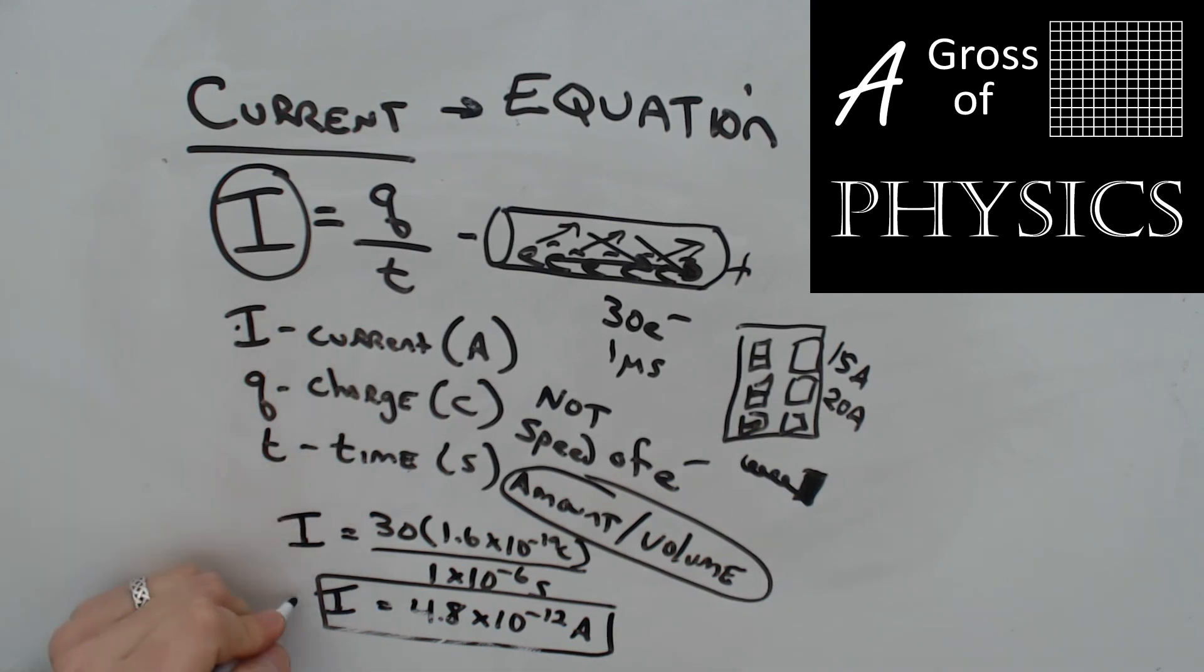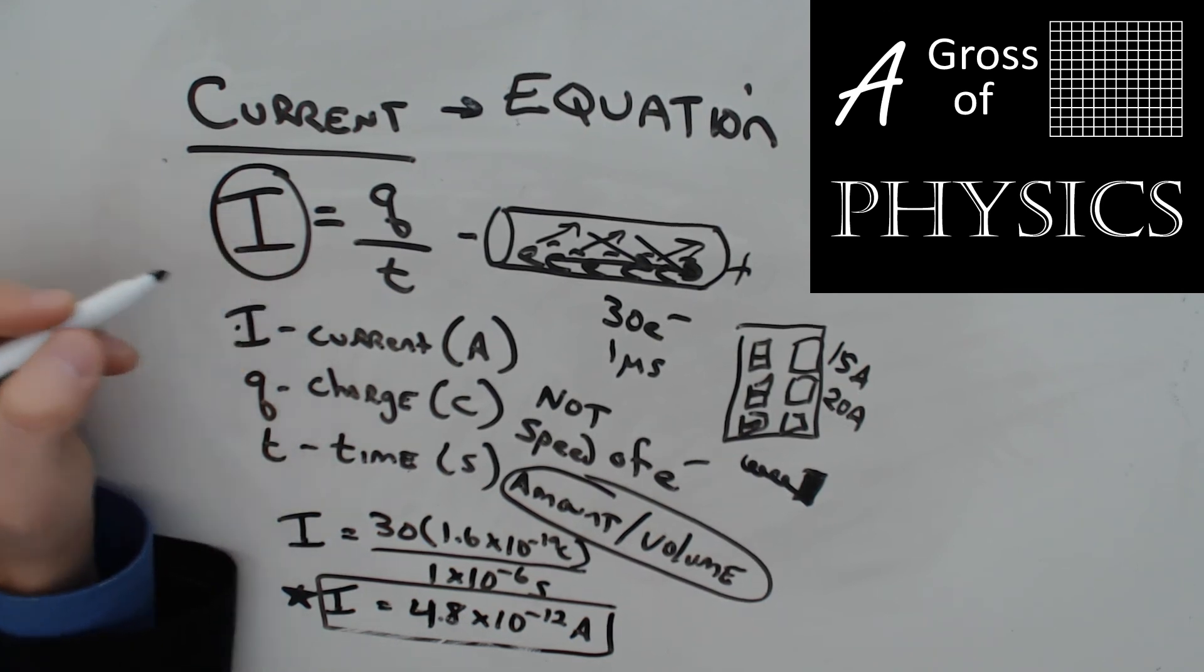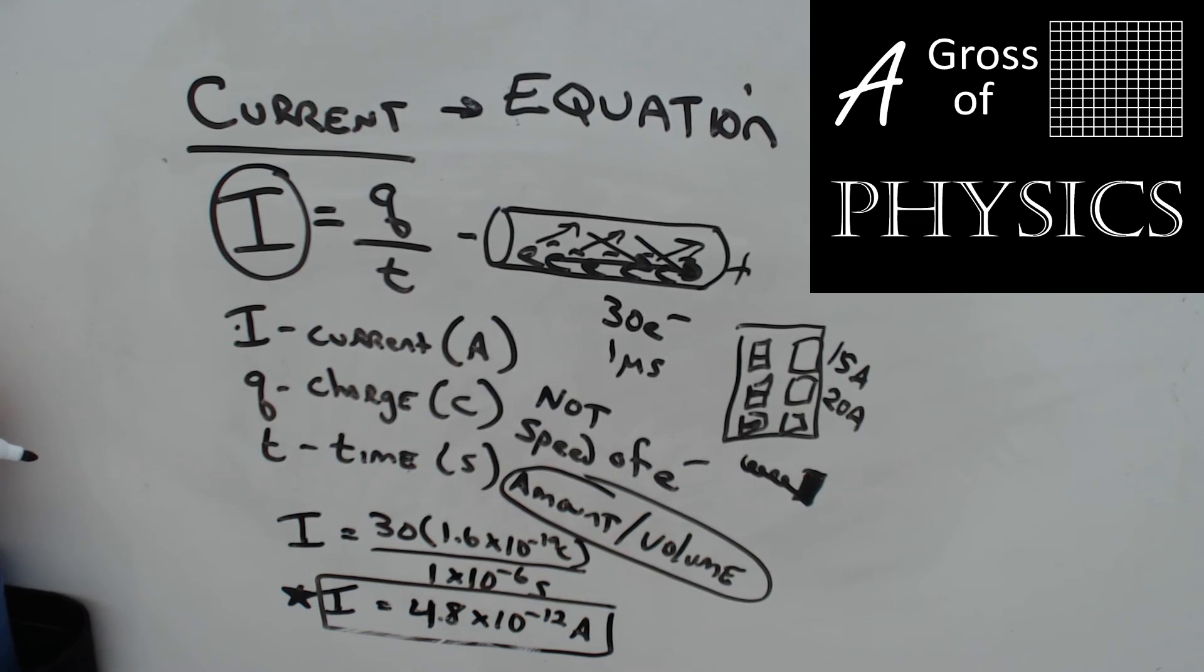So in this case, where we calculated 4.8 times 10 to the negative 12 amps, that's a really small value. But in your house, you can have values in the whole number of amps. But that's very dangerous, and you can definitely get electrocuted with that kind of current flow. Well that's current, and that's how you calculate it. I equals Q over T, or as I like to say, I am a QT.